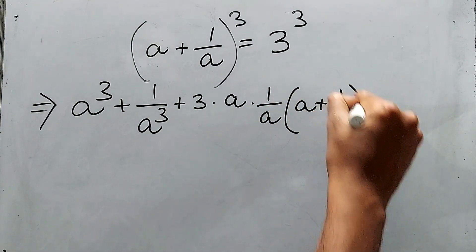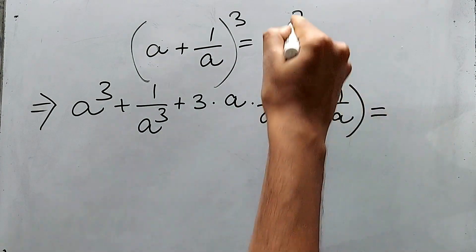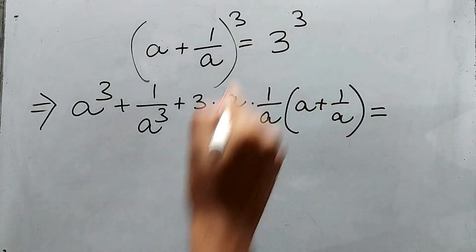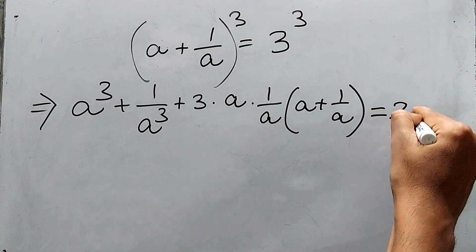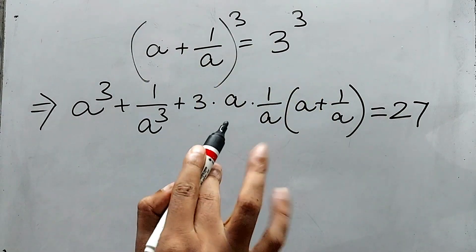We know this value. Now a + 1/a is 3—we know this value. And a and 1/a cancel automatically, so 3 * 3 is 9.